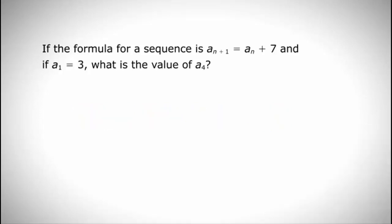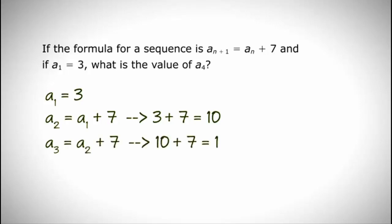So here we're trying to solve for the value of a sub 4, and we have the starting point, a sub 1. So we literally want to solve for every number leading up to a sub 4. If a sub 1 is 3, a sub 2 is going to equal a sub 1 plus 7, or 3 plus 7, which is 10. Now that we have the value of a sub 2, we can solve for the value of a sub 3. a sub 3 is going to equal a sub 2 plus 7, which is 10 plus 7, 17.